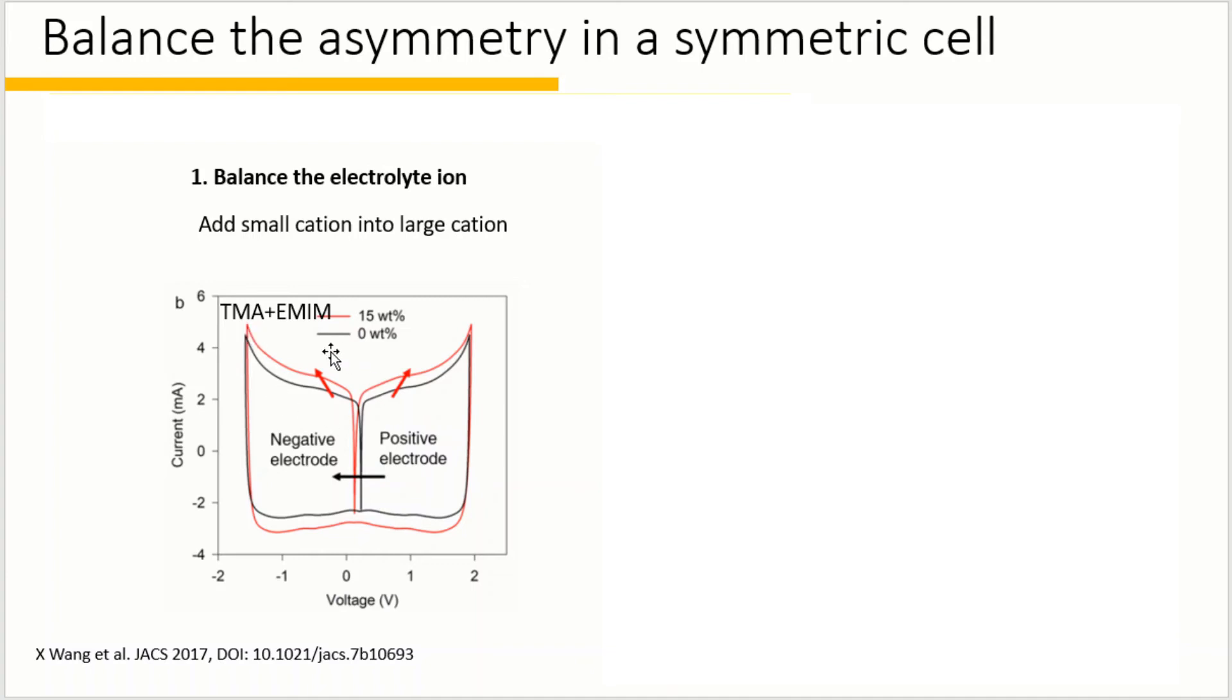This is however not due to the size effect as TMA ions actually show similar size to EMIM. The voltage is balanced because the cation-pi interaction between the TMA ion and the ring of imidazolium in the pore can attract the TMA and EMIM packed closer with each other and hence higher capacitance per surface area. Balancing the electrolyte may involve a lot of factors including the size and interactions.